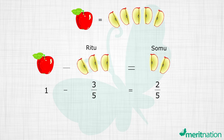The third part of the question is what is the difference between the two shares? This is simple subtraction: 3/5 minus 2/5, and you get 1/5. So Ritu's share is larger than Somu's share by 1/5.